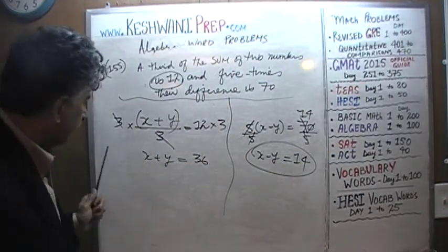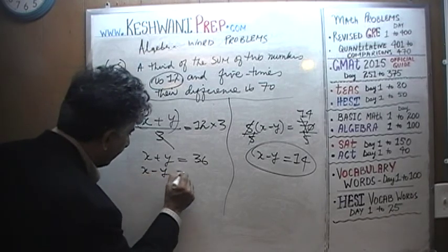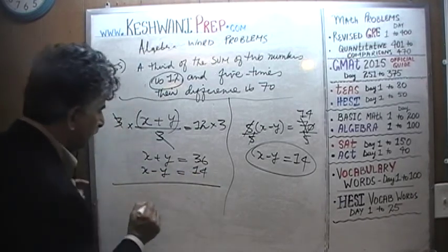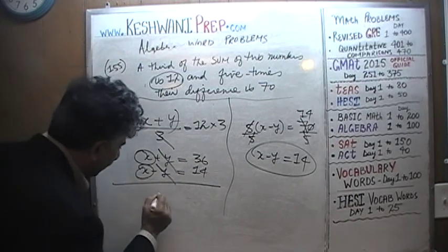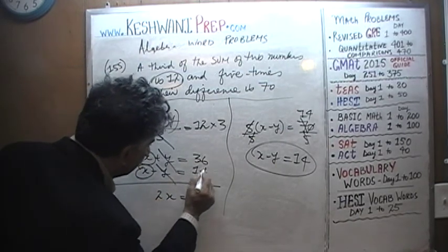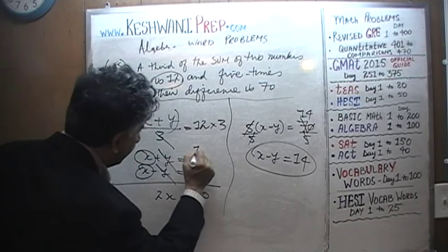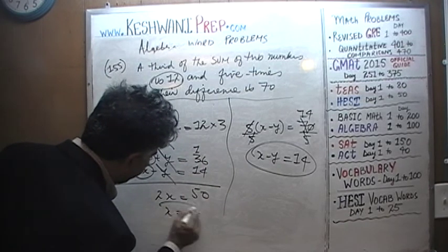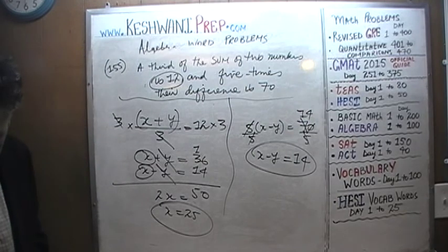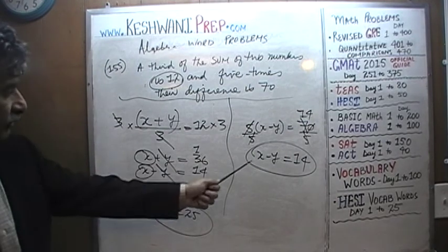The sum is 36. Let's put this equation here: X minus Y must be 14. Add the two equations, the Y's are going to drop out, and X plus X equals 2X must equal 6 plus 4 is 10, carry one, and it's 50. X equals 25.